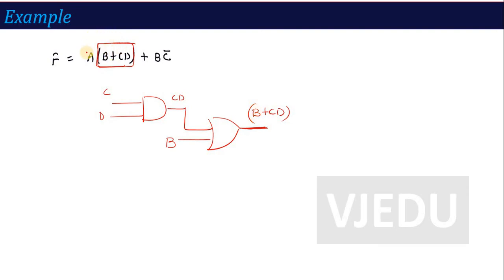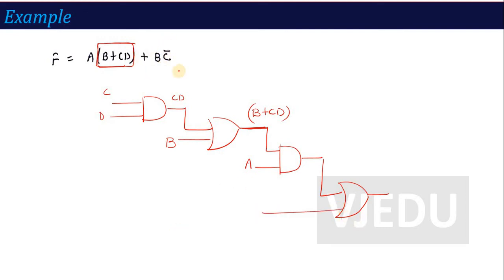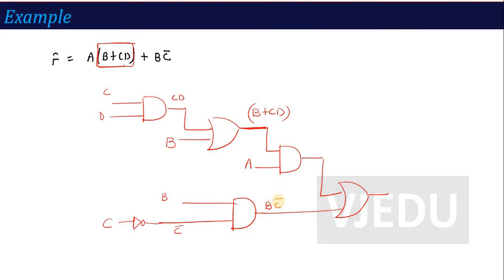Now this combination B + CD needs to be multiplied with A, so I apply an AND gate with inputs A and the OR gate output, giving A(B + CD). Then for BC̄: this is a product term, so I use an AND gate with input B and input C̄. C̄ is generated using a NOT gate (inverter) applied to C, generating BC̄.